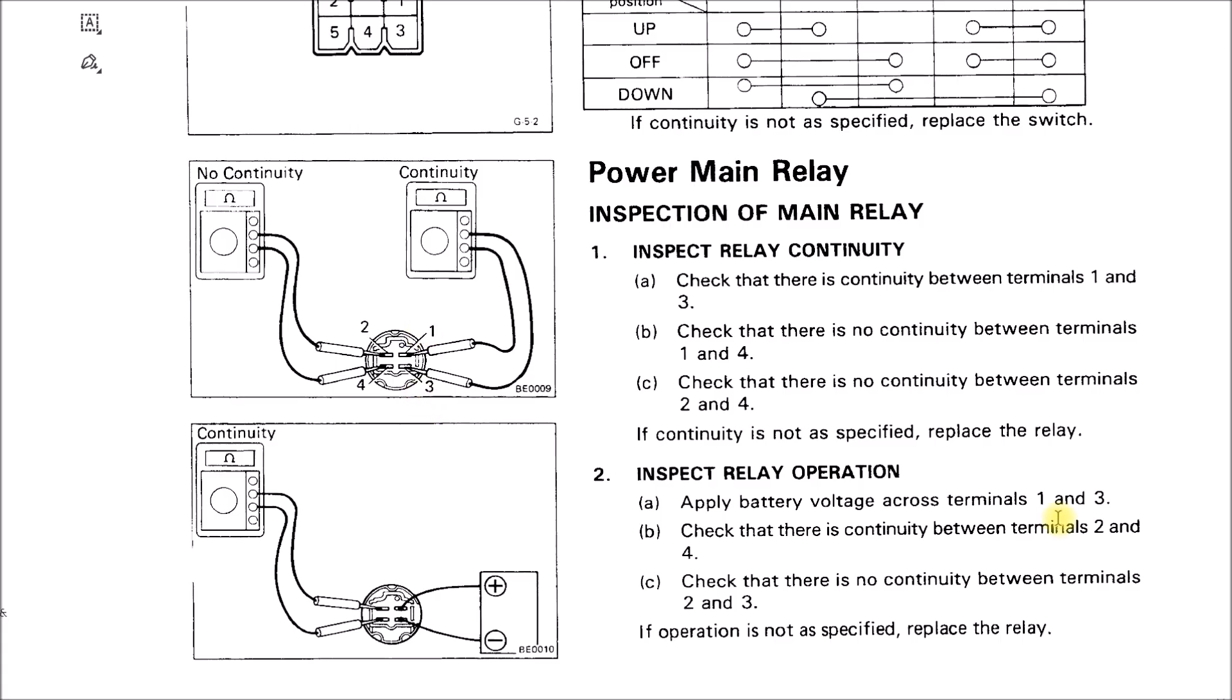Then it says if you apply power to 1 and 3, terminals 2 and 4 have continuity - that's where I have the jumper. So I just pulled out the relay, and it's real easy to check. One of those pins has power on it from the battery, so it's constant 12 volts, and then the other pin right below it, that's the one you want to plug the jumper into.